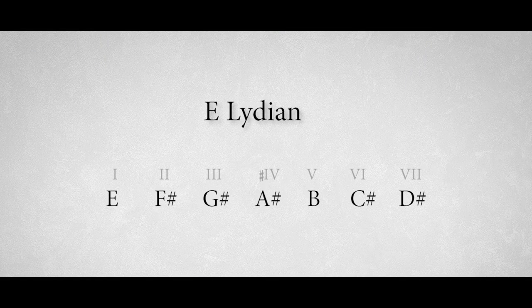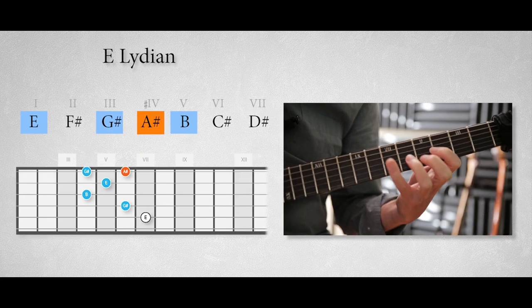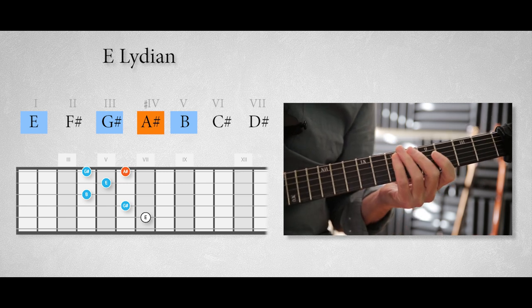You can imagine that we can do the same for every mode. The E Lydian mode, the fourth mode of the B major scale, has a raised fourth degree, which is the note A sharp. If we add this to the major triad, then we end up with an arpeggio like this. A lovely Lydian sound, right?